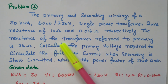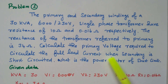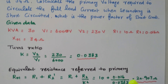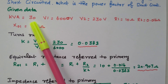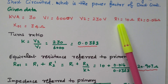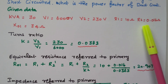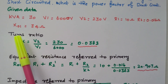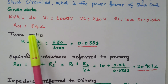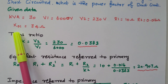The reactance of the transformer referred to the primary is 34 ohm. Calculate the primary voltage required to circulate the full-load current when the secondary is short-circuited, and find the power factor of the short circuit. The kVA is 30 kVA, primary voltage is 6000 volts, secondary voltage is 230 volts, R1 is 10 ohm, R2 is 0.016 ohm, and the total reactance referred to the primary, X01, is 34 ohm.